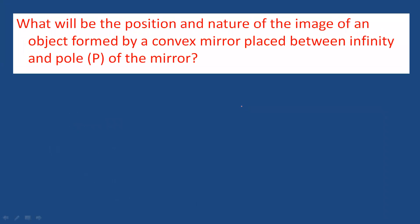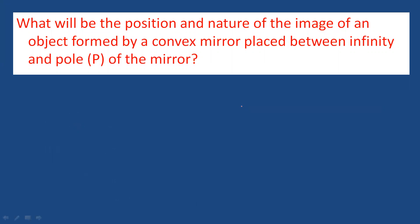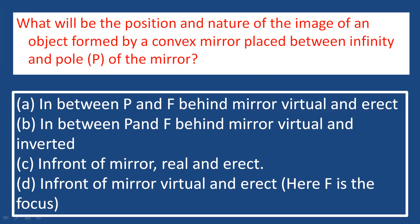What will be the position and nature of the image of an object formed by a convex mirror placed between infinity and the pole of the mirror? For a convex mirror, when the object is placed at infinity, the image is formed at F. In any position, a convex mirror forms a virtual image.